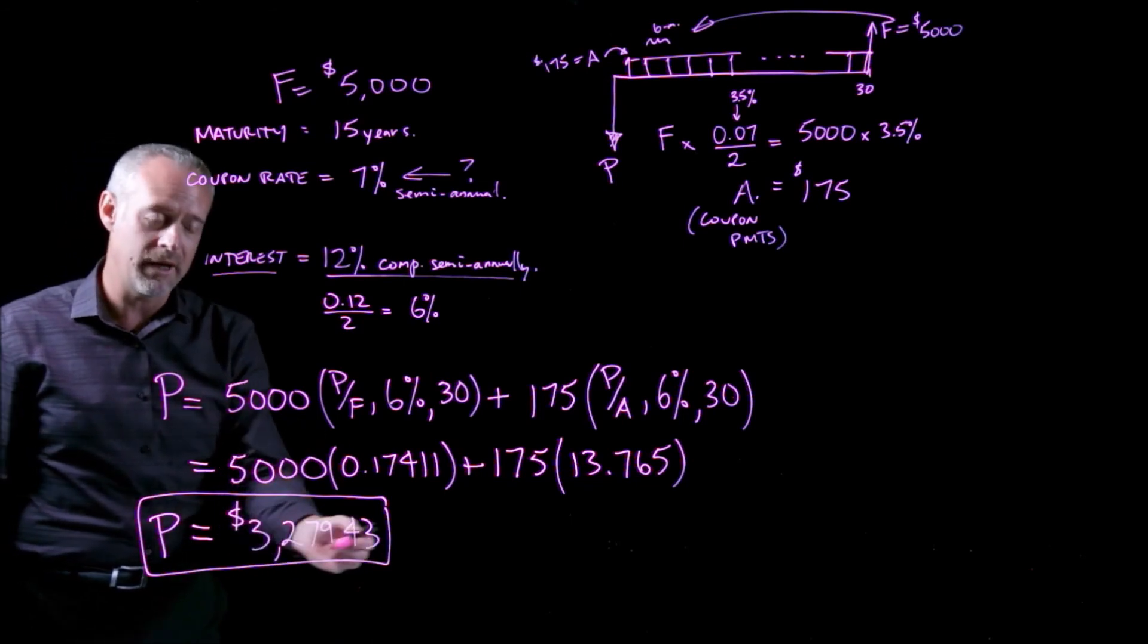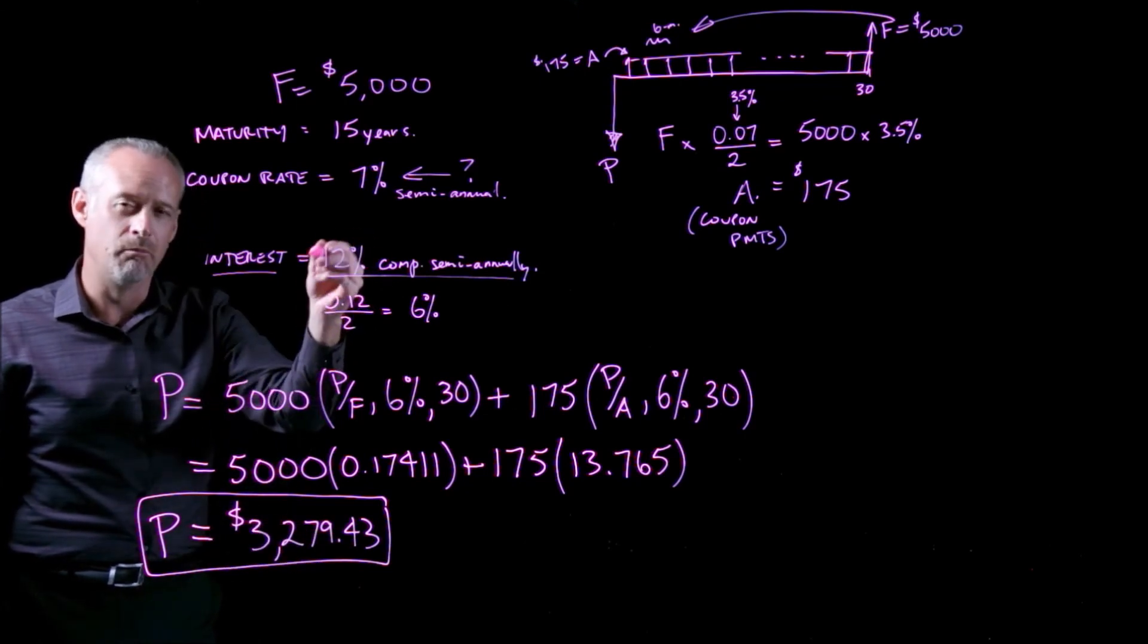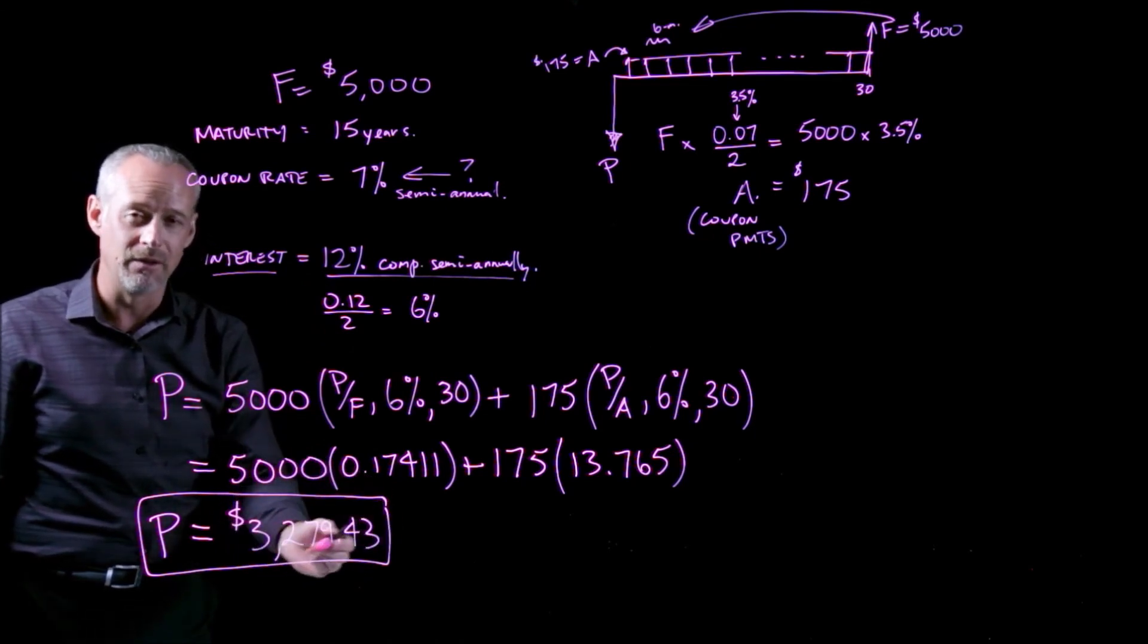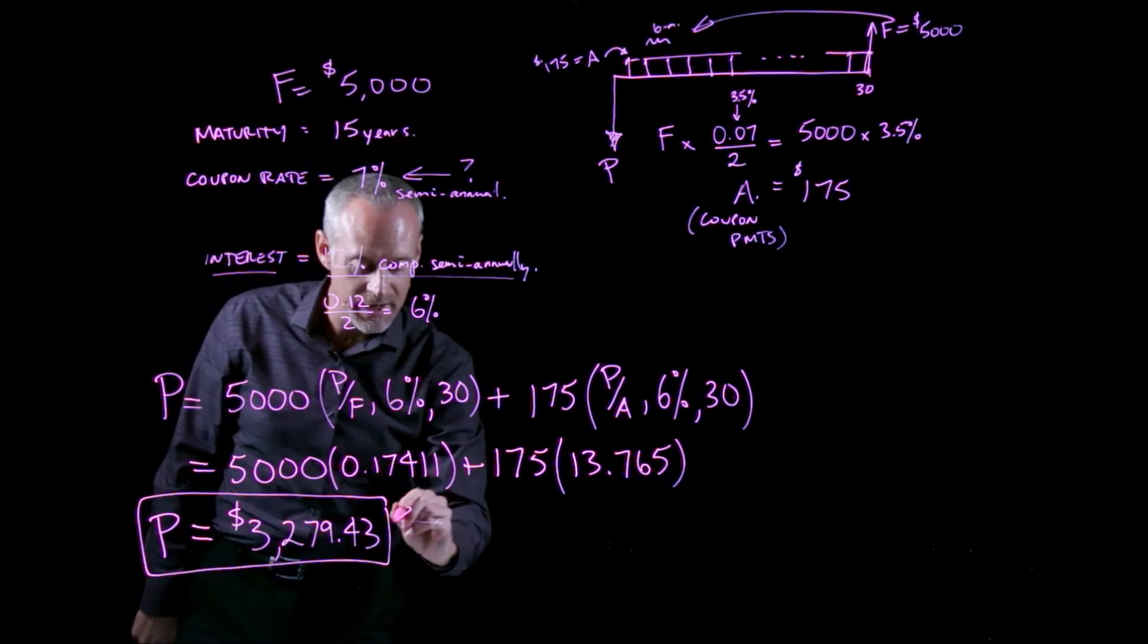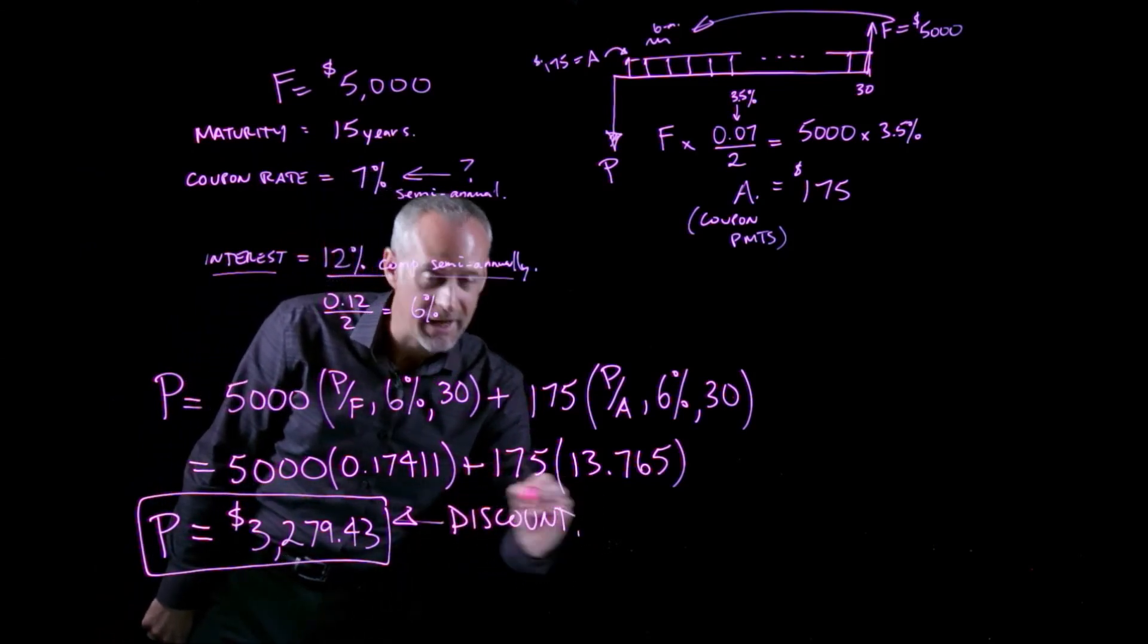When we calculate the price I'm willing to pay for the bond using this market-determined rate, and when the number is less than the face value of the bond, we say that the bond is trading at a discount.